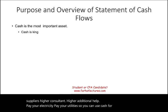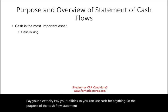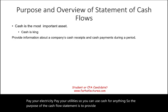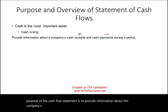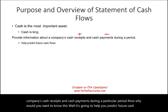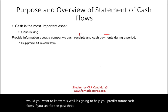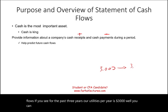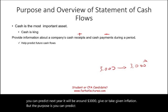The purpose of the cash flow statement is to provide information about the company's cash receipts and cash payments during a particular period. Why would you want to know this? It's going to help you predict future cash flows. If you see that for the past three years your utilities per year is $3,000, you can predict that next year it will be around $3,000.